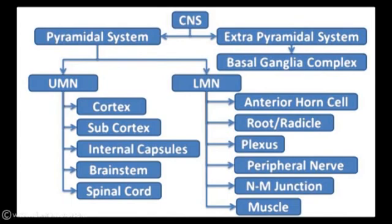The lower motor neuron starts from the anterior horn cell, going to the root, the radicle, the plexus, peripheral nerve, neuromuscular junction, and the muscle. We will discuss each anatomical level and its impact on signs and symptoms. The key in CNS assessment is to anatomically localize the lesion. Starting with the highest level — the cortex — it is mainly involved in cognitive functions, speech, language, and complex motor activities.